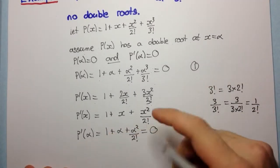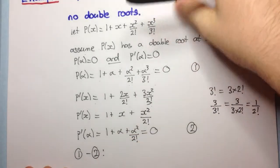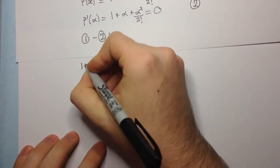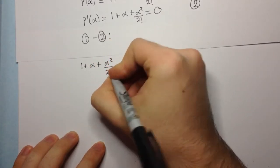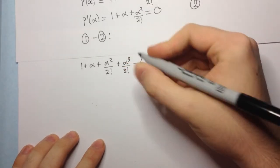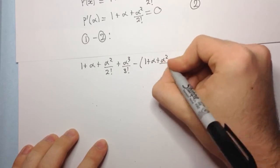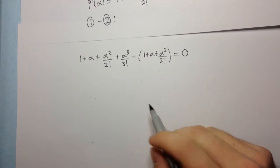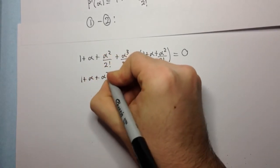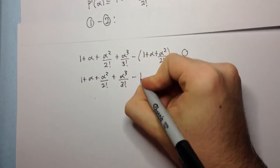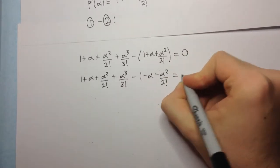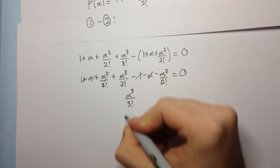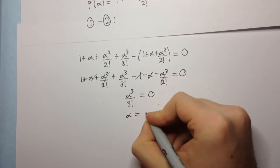Now if we subtract equation 2 from equation 1, equation 1 was 1 plus alpha plus alpha squared over 2 factorial plus alpha cubed over 3 factorial, minus 1 plus alpha plus alpha squared over 2 factorial, equals 0. Distributing the minus, we get minus 1, minus alpha, minus alpha squared over 2 factorial, and you'll notice all these terms cancel except for alpha cubed over 3 factorial. So we get alpha cubed over 3 factorial equals 0, which means alpha equals 0.